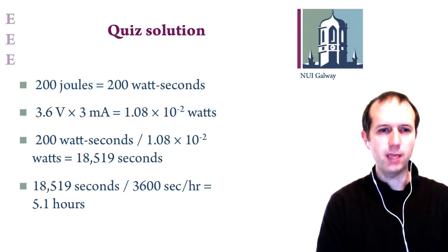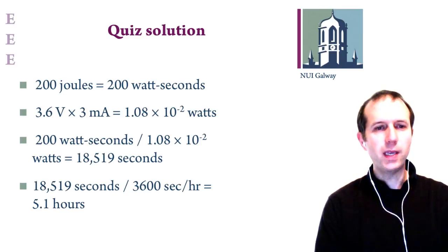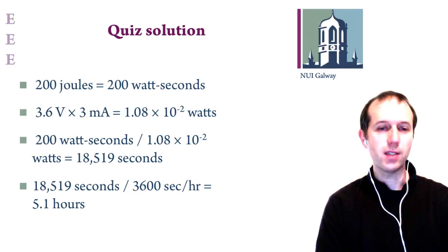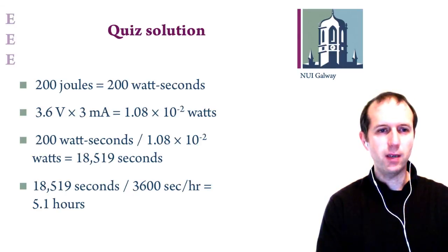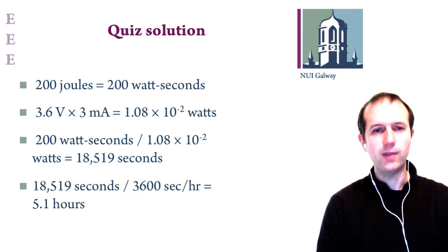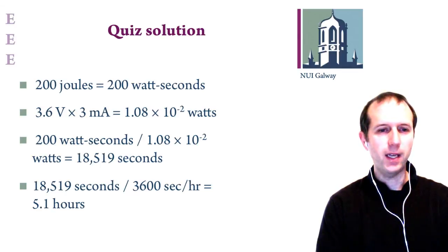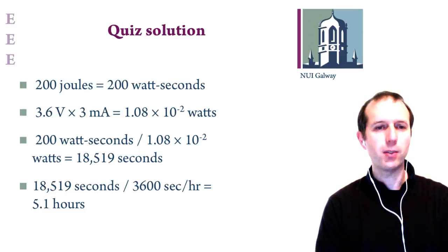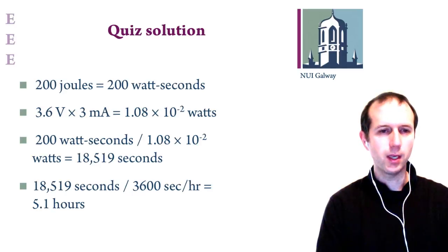That gives P = 1.08 × 10⁻² watts, roughly 10 milliwatts. We know the battery's capacity is 200 watt-seconds and the power draw is 1.08 × 10⁻² watts. Dividing 200 watt-seconds by 1.08 × 10⁻² watts gives approximately 18,000 seconds, which works out to about five hours. So drawing 3 milliamps from a 200-joule battery gives roughly five hours of operation in that mode.